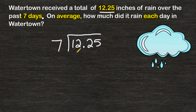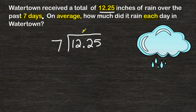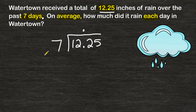Notice in this problem we have no decimal in our divisor and only a decimal in our dividend. If you have a decimal only in your dividend, simply write another decimal directly above that. You do not move this decimal over to the right. The only time you move a decimal in your dividend to the right is if you had one in your divisor that you had to move over to the right.